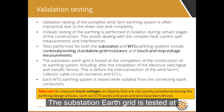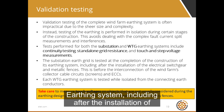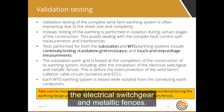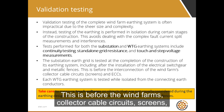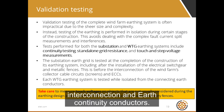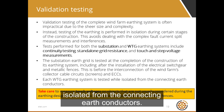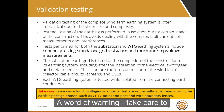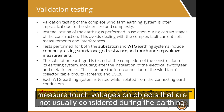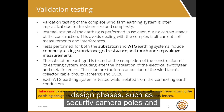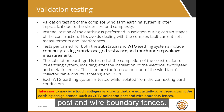The substation earth grid is tested at the completion of the construction of its earthing system, including after the installation of the electrical switchgear and metallic fences, and before the wind farm's collector cable circuits, screens, interconnection, and earth continuity conductors. Each WTG earthing system is tested while isolated from the connecting earth conductors. Take care to measure touch voltages on objects not usually considered during the earthing design phases, such as security camera poles and post-and-wire boundary fences.